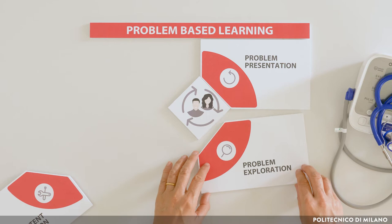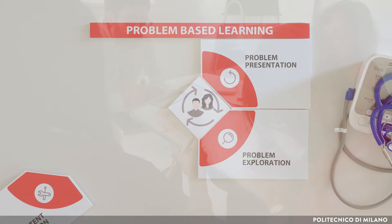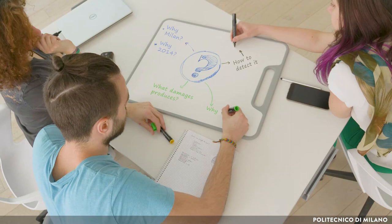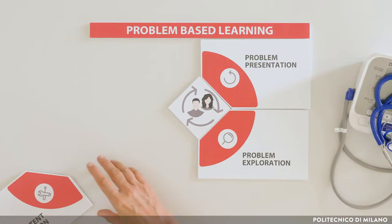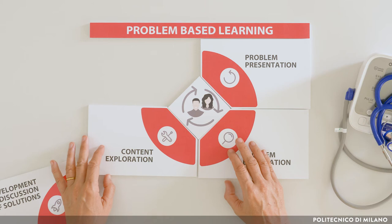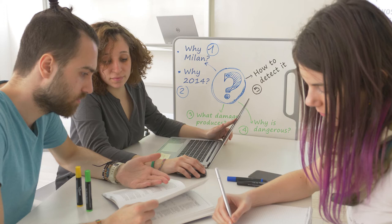Then students start to explore the problem, organized into small groups. Exploring the problem means articulating its components and exploring which information, methods, or skills will be necessary to solve it. When the problem has been deconstructed and explored, that's when the explorative research starts — a search for information, processes, and methods needed to solve the problem.